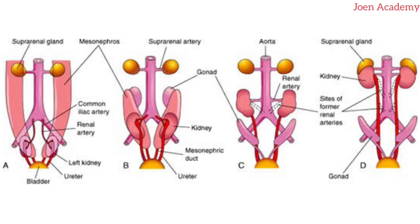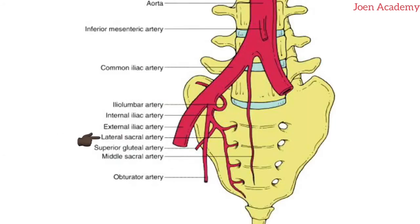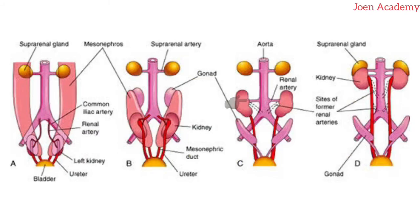Subsequent development of the embryo and differential growth of the abdominal wall causes the kidney to ascend upwards into its adult position in the lumbar region. During this ascent, blood vessels that supply it change and the higher branches of the aorta take over. The lateral sacral arteries supply the sacral region, the cauda equina precisely. The renal artery is a branch of the descending aorta.